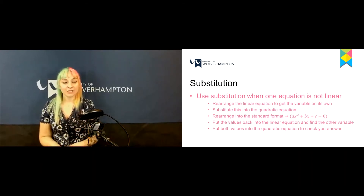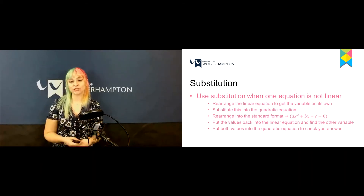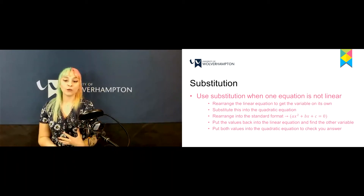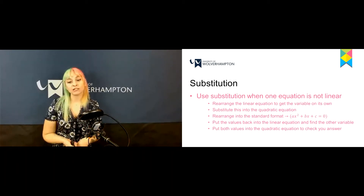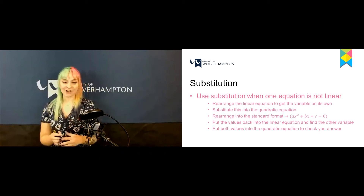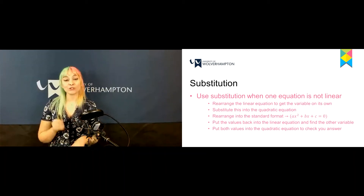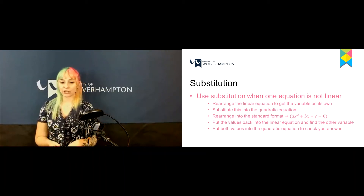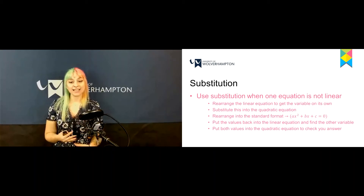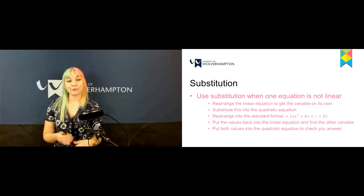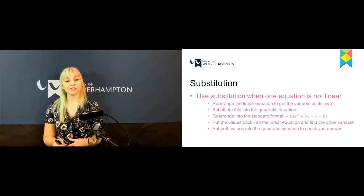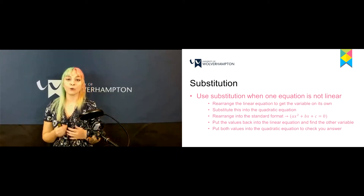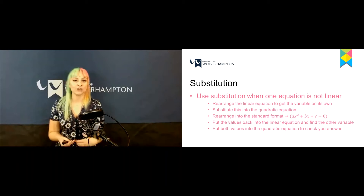In simultaneous equations you can also use substitution, which you use when one equation is not linear. Rearrange the linear equation to get the variable by itself, then substitute it into the quadratic equation. Rearrange into standard format, put the values back into the linear equation to find the other variable, and finally substitute back into the quadratic equation to double-check your answer.